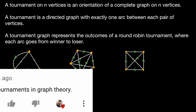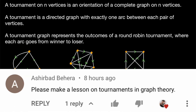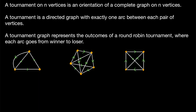Today we're going to introduce a special type of directed graph called a tournament. A tournament on n vertices is an orientation of a complete graph on n vertices. All this is saying is that if we start with a complete graph on n vertices and then assign a direction to each edge — which is called an orientation — that is a tournament.